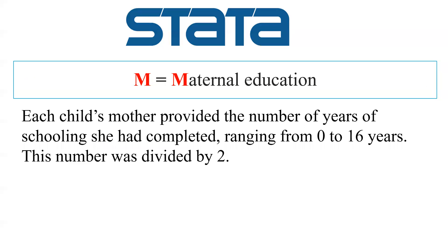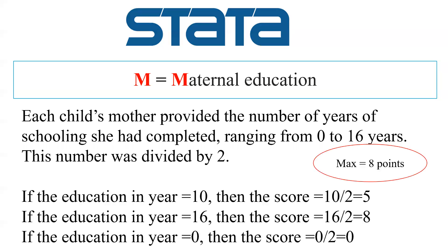For maternal education, the maximum years of education is 16 and the minimum is zero. Zero means no schooling and 16 means master's degree complete. The years of education are divided by two. For example, if education is 10 years, the score is 10 divided by 2, which equals 5. If education is 16 years, the score is 16 divided by 2, which equals 8 — the maximum eight points.